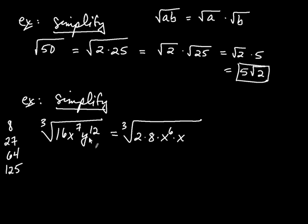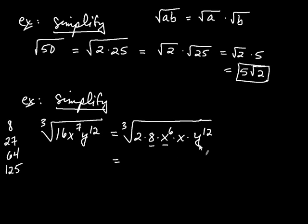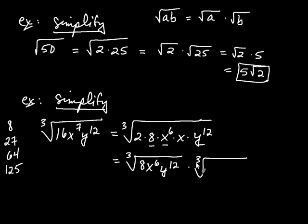When I think about y to the 12th, I already know this is a perfect cube because 12 is divisible by 3, so I don't have to change that. Now I'll split the expression up. My perfect cubes are 8, x to the 6th, and y to the 12th. So I have the cube root of 8 times x to the 6th times y to the 12th, times the cube root of whatever wasn't a perfect cube — that was 2 and x.